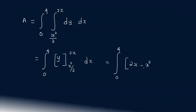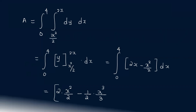This gives the integral from 0 to 4 of (2x minus x squared by 2) dx. Integrating: 2x integrates to x squared, and x squared by 2 integrates to x cubed by 6. Evaluating from 0 to 4: 4 squared minus (1 by 2) times 4 cubed equals 16 minus 64 by 6, giving the area equal to 16 by 3.